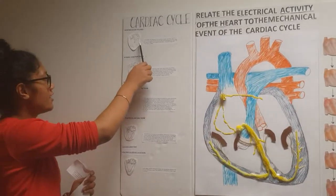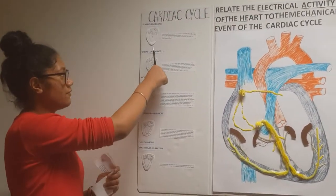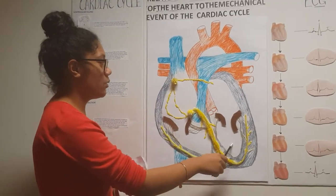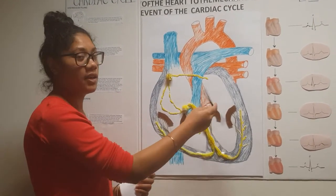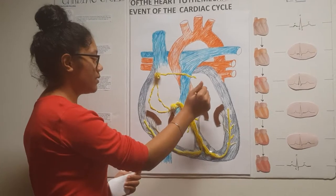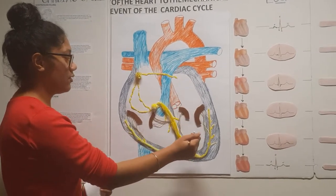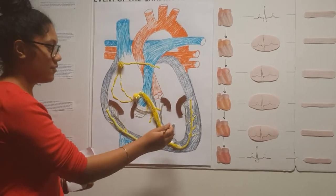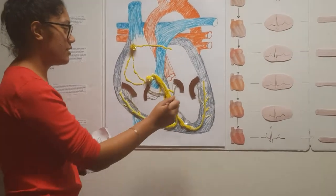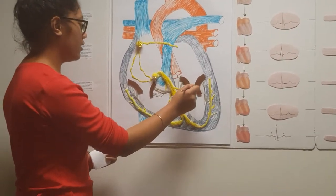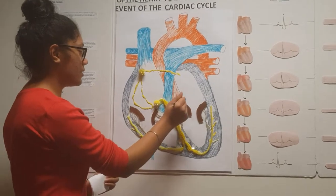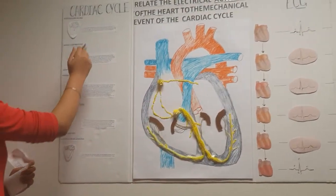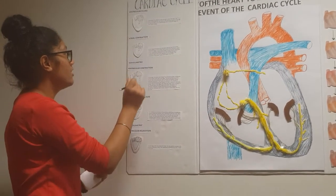The first step of the cardiac cycle is ventricular filling. This is when the pressure in the ventricle is lower than that of the atrium, so blood from the atrium flows passively through the inlet valve down into the ventricle. In this stage, the inlet valve is open but the outlet valve is closed.